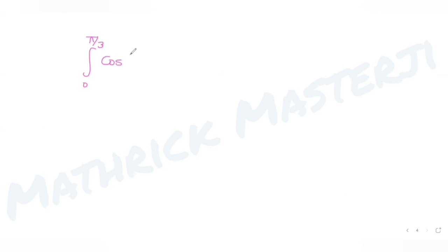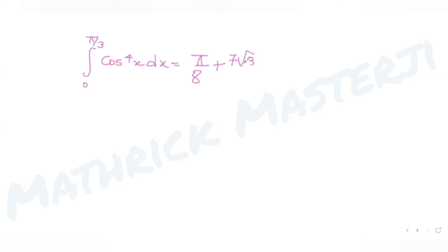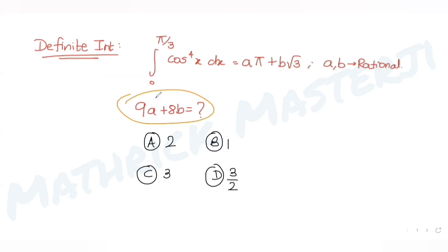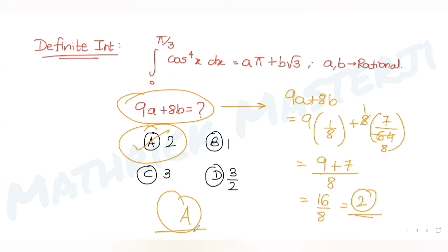The integral equals π/8 + 7√3/64. Equating with aπ + b√3 gives a = 1/8 and b = 7/64. Now computing 9a + 8b: 9(1/8) + 8(7/64) = 9/8 + 56/64 = 9/8 + 7/8 = 16/8 = 2. This matches option A, so the answer is 2.